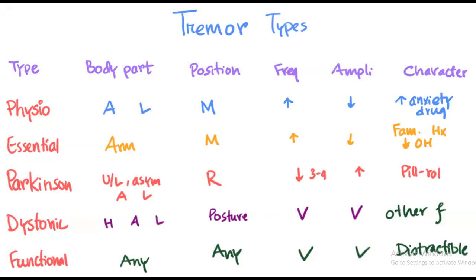Let's talk about tremor and the types of tremor. Tremor is a rhythmical movement of a part of the body, usually due to alternating activation of the agonist muscle and the antagonist muscle. There are five common types of tremor.